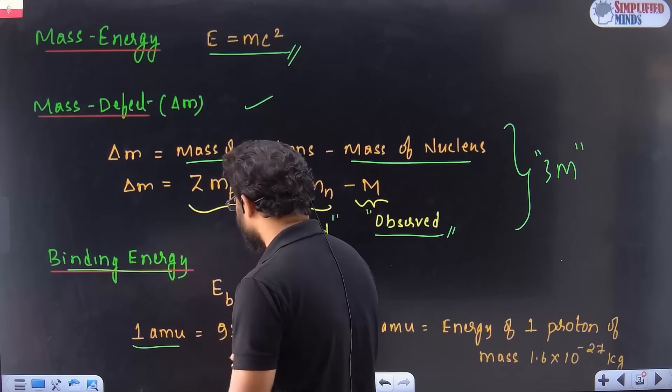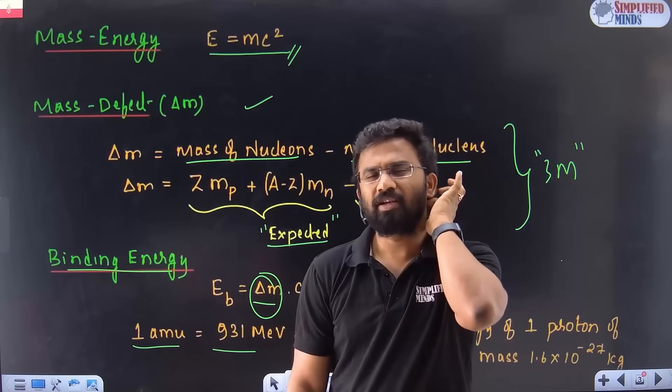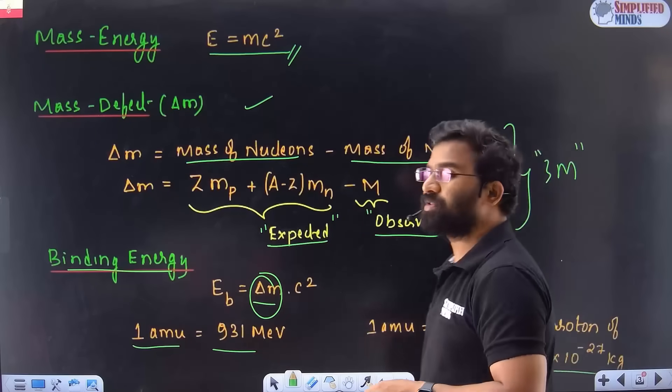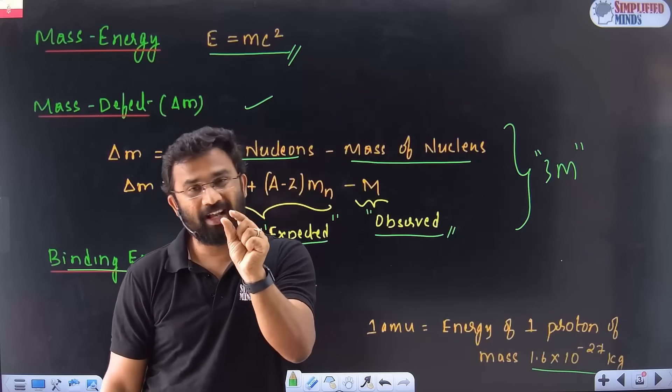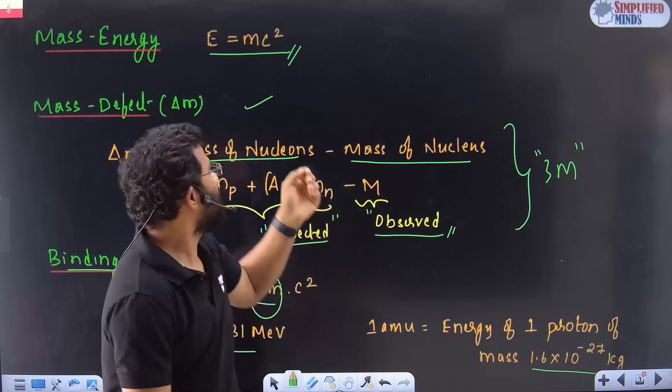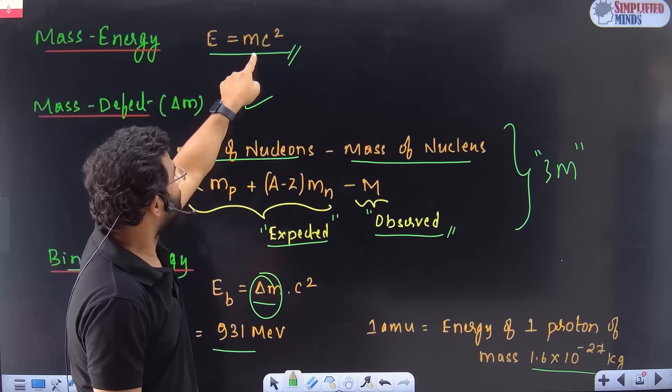And then they also give mass of the nucleus. You just calculate that. And then get the binding energy, delta M into C square. So we don't do delta M into C square in usual numericals. Because we directly find one amu is equal to, how are we going to find one amu? For example, if you take one proton, the weight of the proton is, you know the mass, it will be given for you. And then this is 1.6 × 10⁻²⁷ kg, one proton.